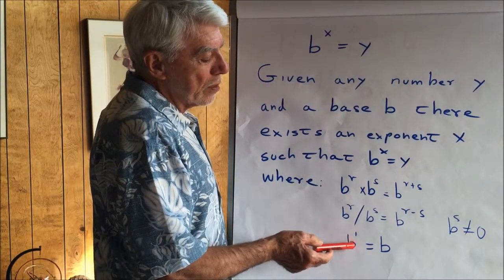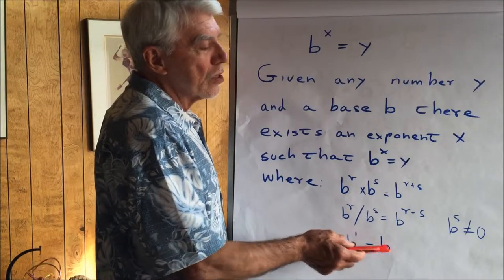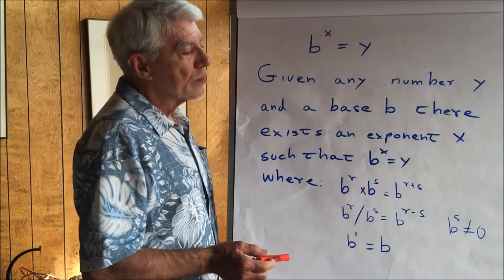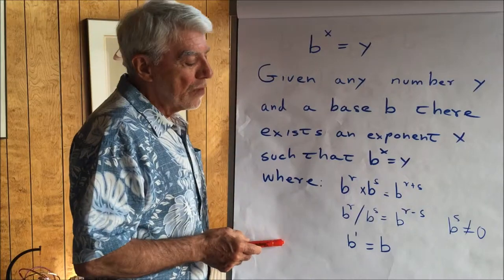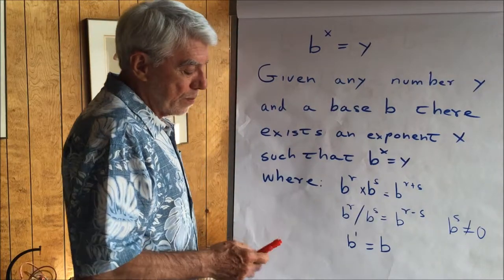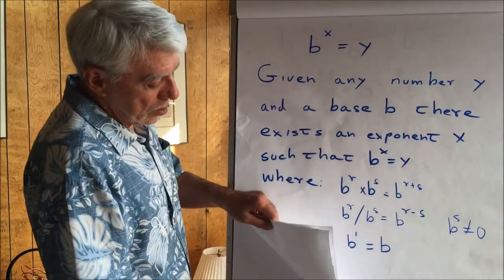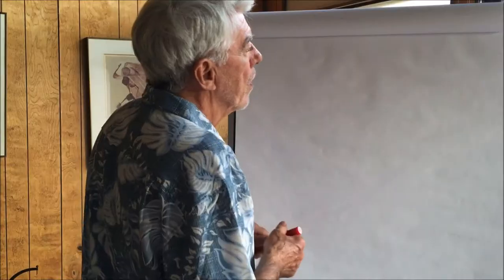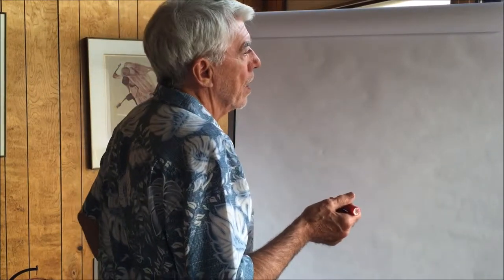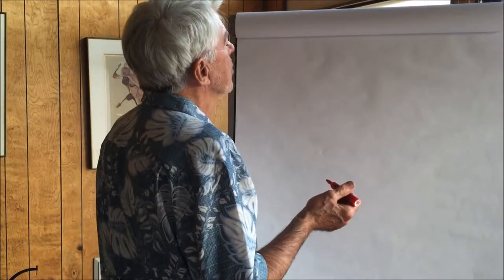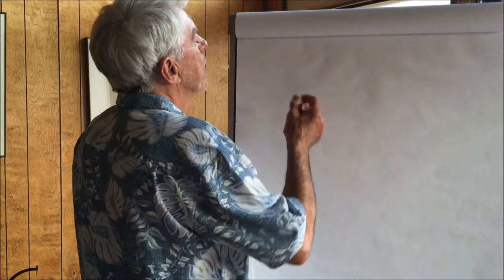The third part of the definition is that b to the first is equal to b. Given this definition, we can do all kinds of things. Let's take a look at these rough edges and see if our definition gets rid of them.